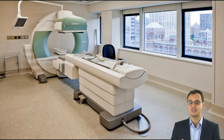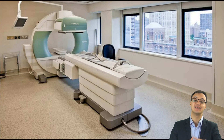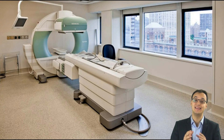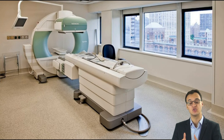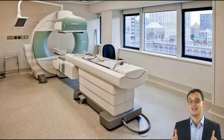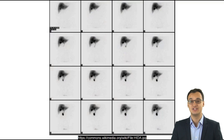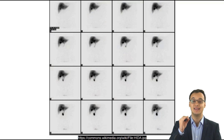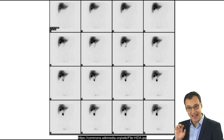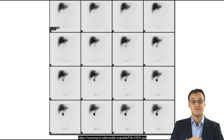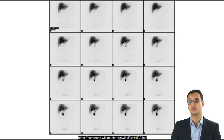If ultrasonography is not enough for the diagnosis, then cholecystography — a so-called HIDA scan — can be used. However, it takes hours to perform, so it is not recommended in critically ill patients where a delay in therapy could be deadly. In this scan, we inject technetium-labeled hepatic iminodiacetic acid, which is taken up by the liver cells and excreted into the gallbladder. If this does not happen, it is an indication of acalculous cholecystitis.